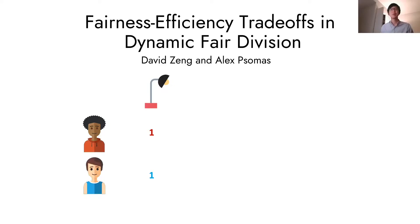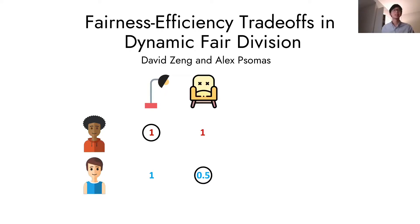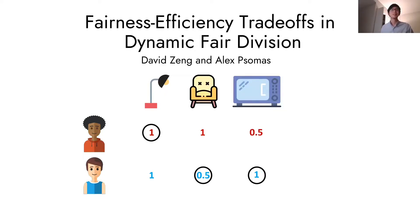Hi everyone. Our paper is about fairness and efficiency in online item allocation. Suppose that you have some agents, and items arrive one by one. When the item arrives, you learn its values and you allocate it immediately. Ideally, this final allocation is going to be both fair and efficient.